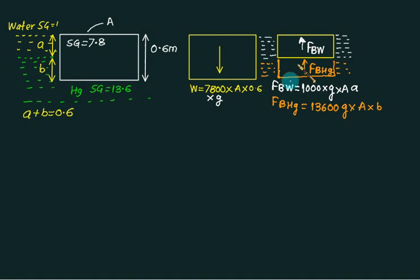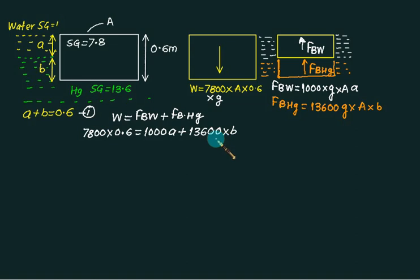We have a balance here, so net downward equals net upward. W equals FB of water plus FB of mercury. In this case, g into A is a common term to all, so that will get canceled. What is left is 7800 multiplied by 0.6, and here we get 1000 into A, and in mercury equation we'll get 13600 multiplied by B. We can divide by 1000 here and develop equation number 2 as A plus 13.6B equal to 4.68.